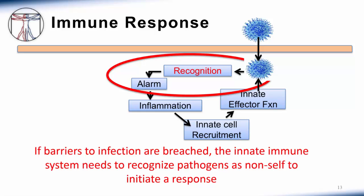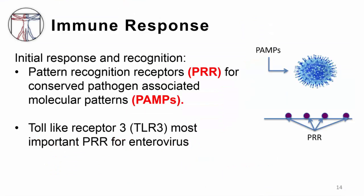The first line of defense against viral pathogens is the innate immune system, which recognizes viral proteins as non-self. This initial recognition is mediated by pattern recognition receptors, or PRRs — glycoprotein molecules found on many cells involved in the innate immune response. They recognize and bind to pathogen-associated molecular patterns, or PAMPs, which are molecular components associated with microorganisms but not found in eukaryotic cells. Toll-like receptor 3, or TLR3, is the most important PRR for enterovirus.